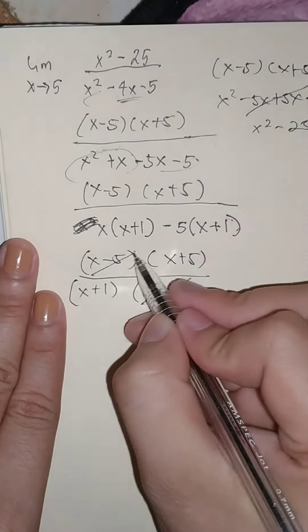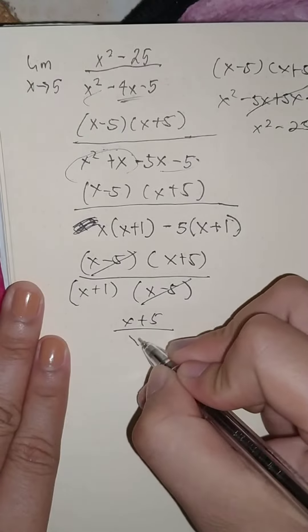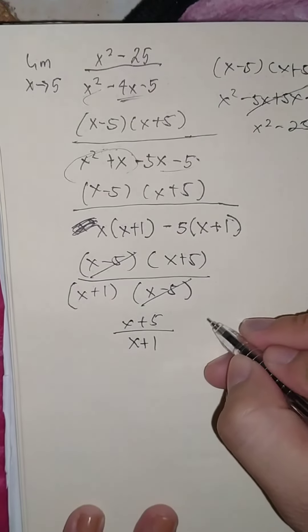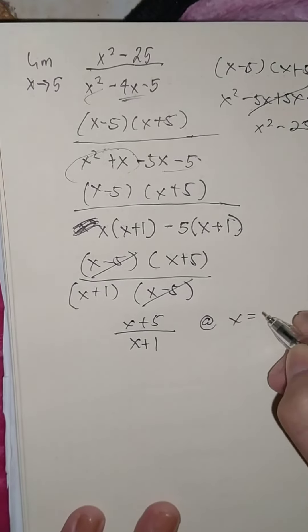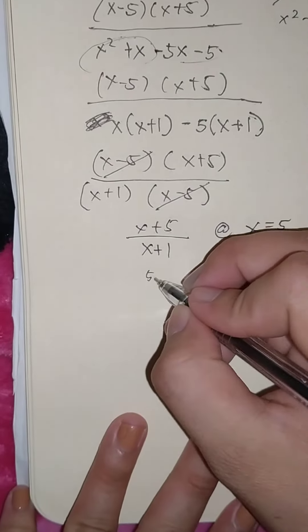So we will have x plus 5 all over x plus 1. At x equals 5, we have now to substitute this. So we have 5 plus 5 all over 5 plus 1.